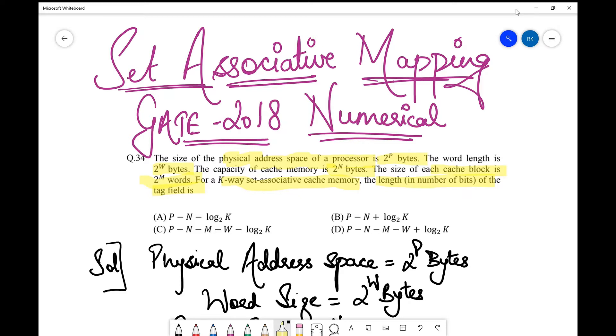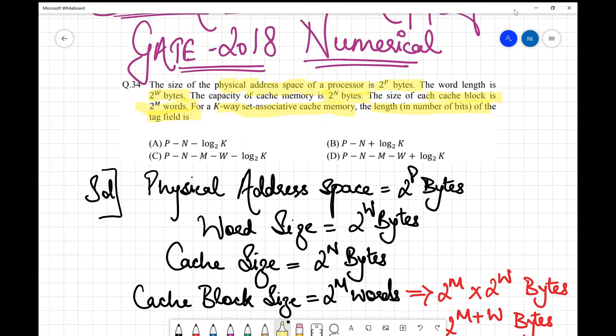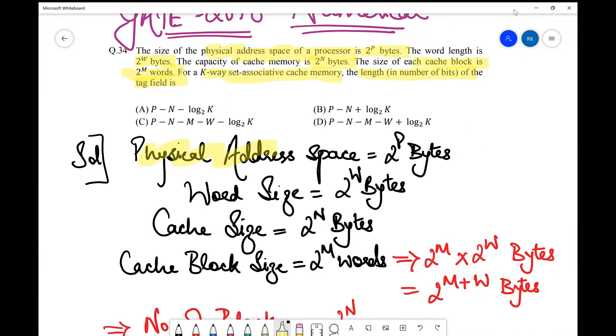Nothing new - they have just asked about the number of bits required to represent the tag field. In the same manner as we solve other questions, first we jot down the given things. The physical address space is 2^p bytes, which means we need p bits to represent it. The word size is 2^w bytes and cache size is 2^n bytes.